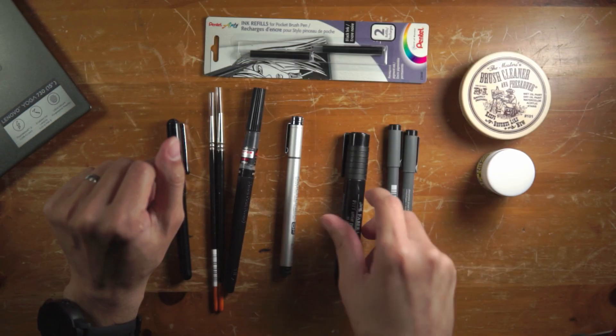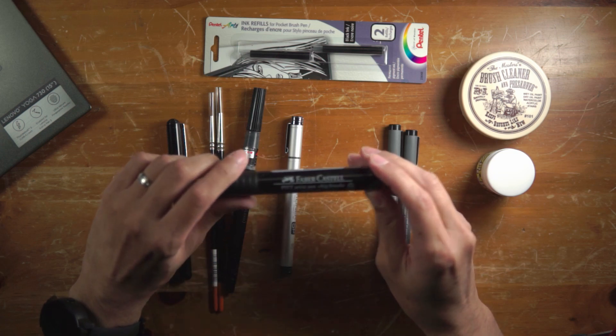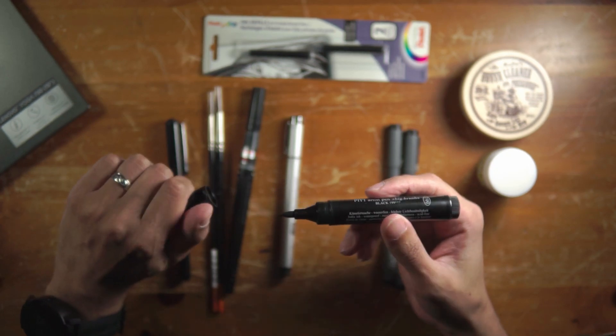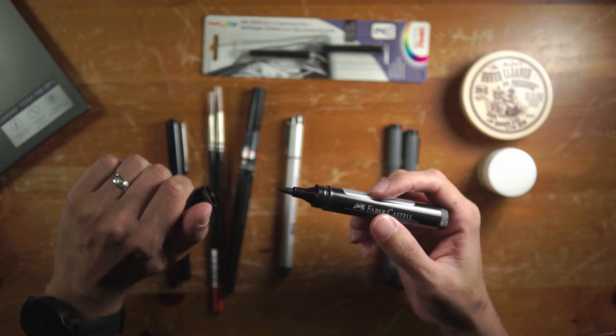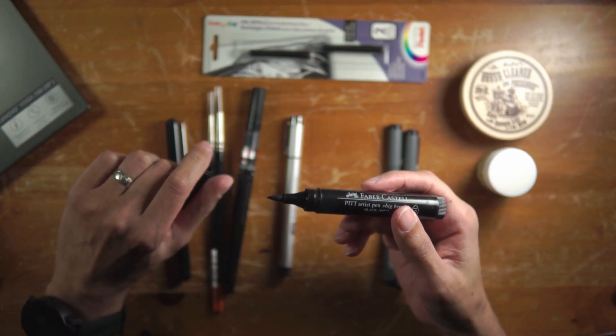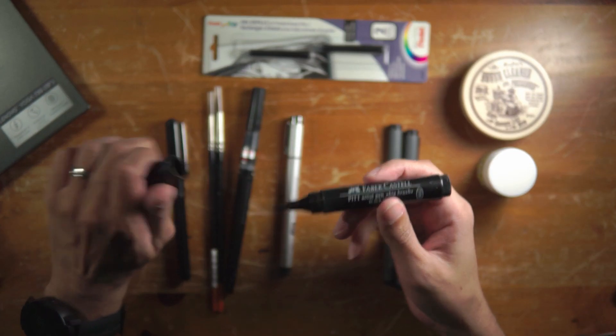Next up is the Faber-Castell Pitt Artist Pen. This is also a brush pen, or I don't really consider this like a brush pen. I consider it more like a brush marker. And the reason is because the tip is incredibly stiff. You really can't get that much of line variation. Maybe you have to break it in. I haven't broken it in.